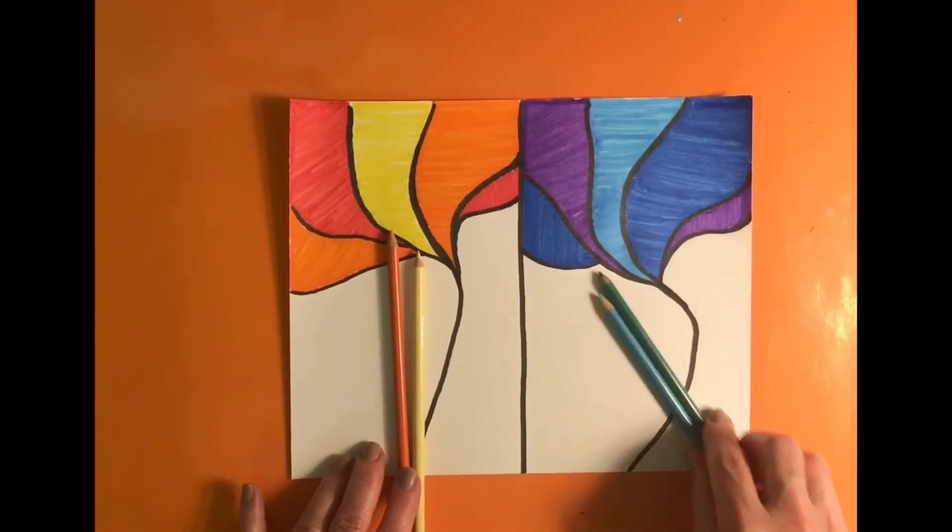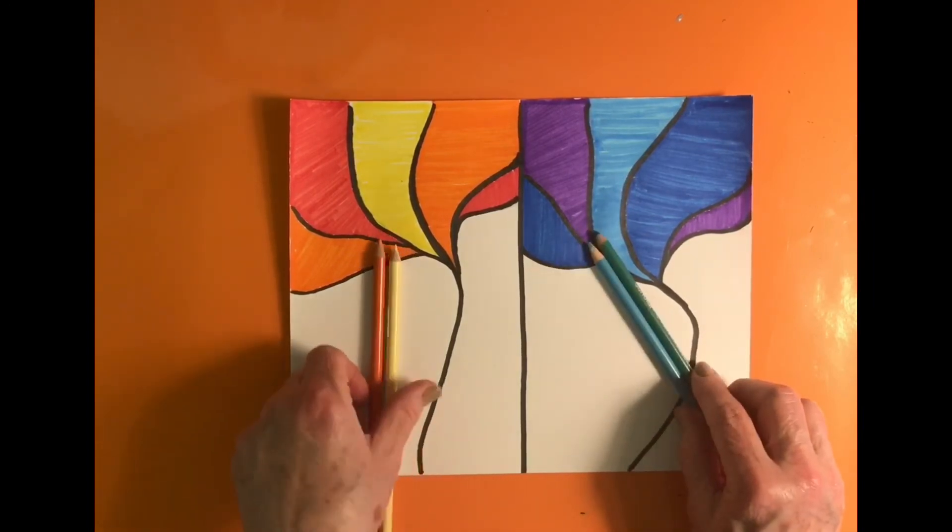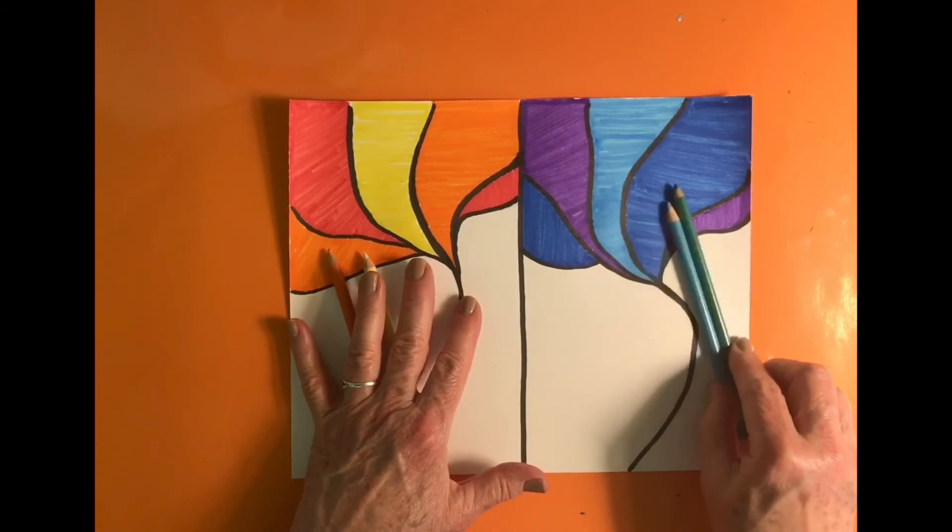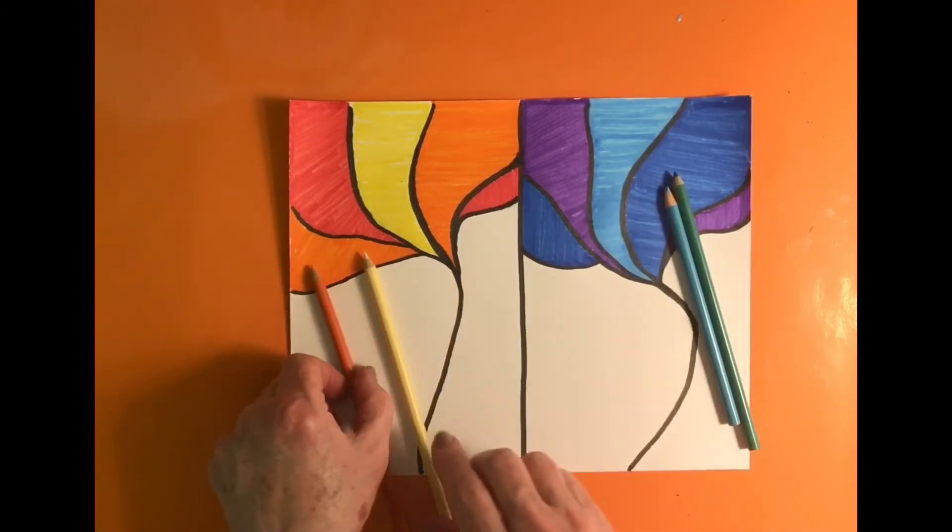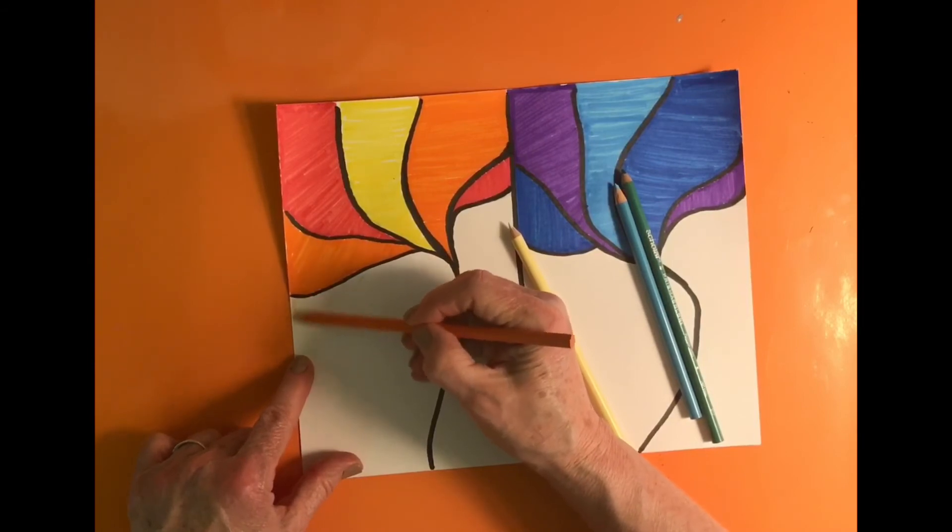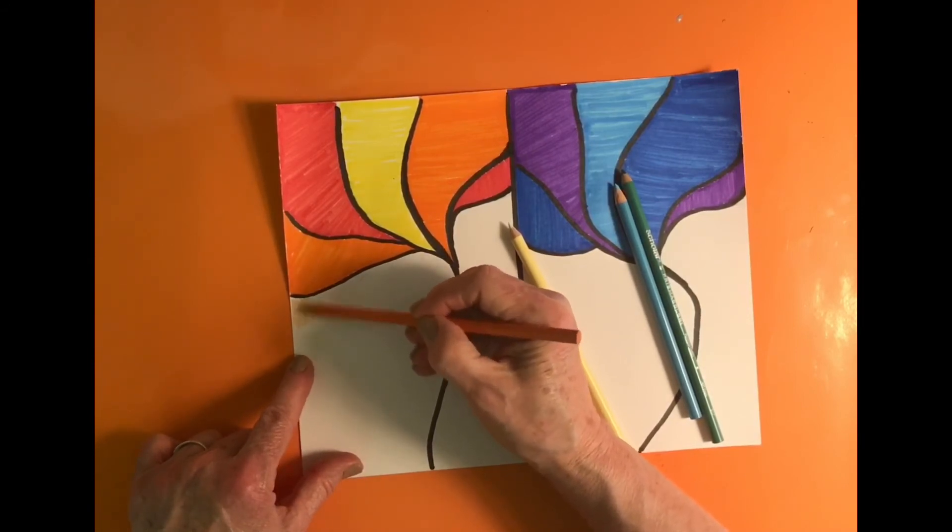Now I'm switching over to using colored pencils. I have yellow and orange, which is going to be the warm side, and blue and green, which is going to be the cool side.